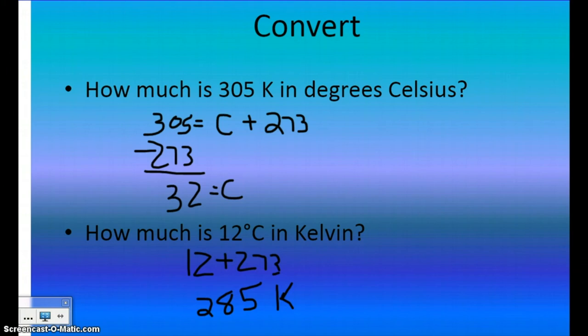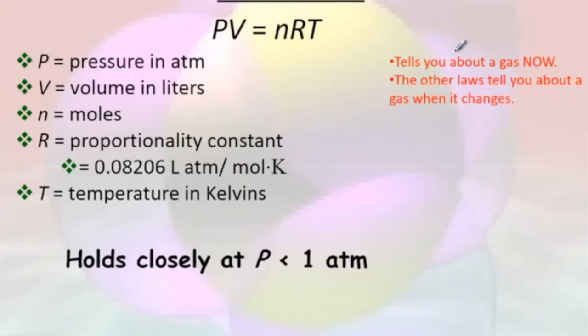So for gas law equations, remember you want to use Kelvin. The ideal gas law is an equation that allows us to relate the pressure, volume, temperature, and amount of a gas. And so if we know several of these variables, it can help us find an unknown variable.